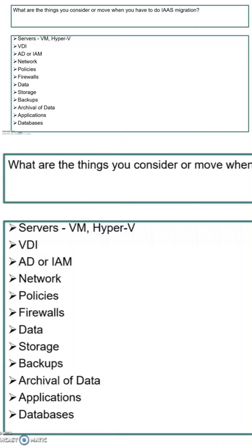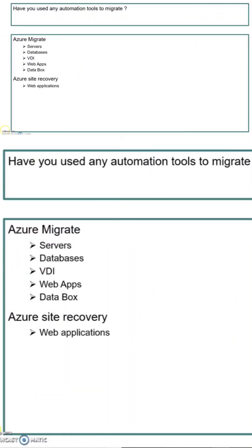You also need to consider what backups they have already taken or need to take, how to move and archive that data, the applications, and the number of databases in the on-premises data center. These are the main things to consider — the list can go on, but these are the things I observed and noticed during our migration. The next question is: have you used any auto...